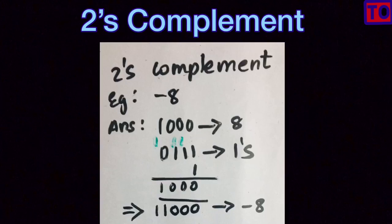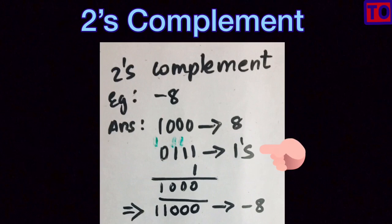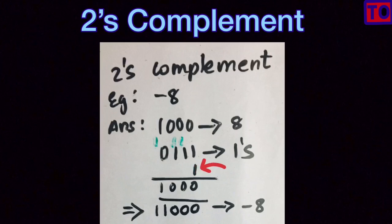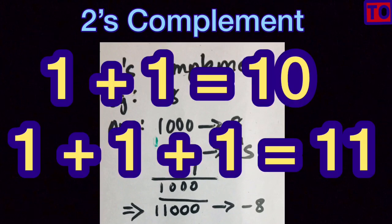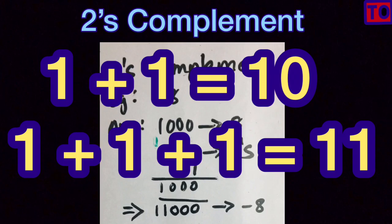The Two's Complement example: for minus 8, the actual binary is 1000. The One's Complement of 1000 is 0111. That is the One's Complement of 8. Now add 1: 0111 plus 1. Adding the binary digits — 1 plus 1 gives 10, so you carry and get 0.